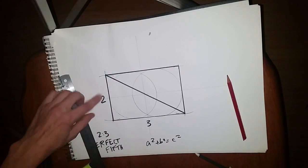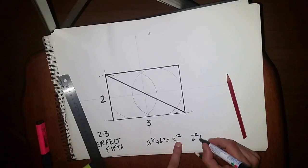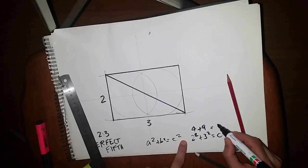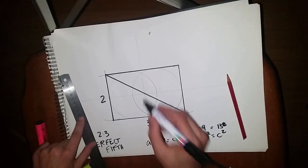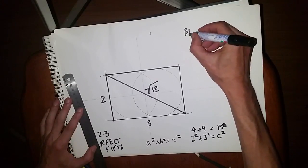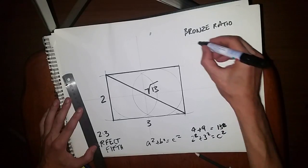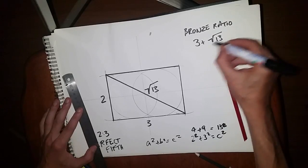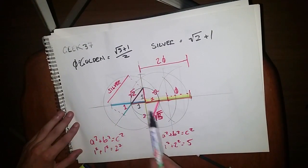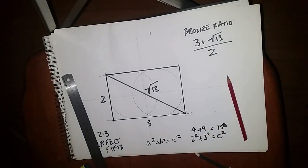So A squared plus B squared equals C squared. And so if I draw the diagonal, now how do we work out how long that line is? Well, this is 2 and that is 3. So 2 squared plus 3 squared equals C squared. So that's 4 plus 9 equals 13. Therefore, this is square root of 13. And the bronze ratio is 3 plus the square root of 13 over 2.